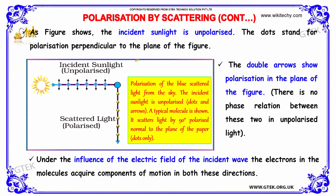As the figure shows, the incident sunlight is unpolarized. The dot stands for polarization perpendicular to the plane of the figure, and the double arrow shows the polarization in the plane of the figure. There is no phase relationship between these two in unpolarized light. Under the influence of the electric field of the incident wave, the electrons in the molecules acquire components of motion in both directions.